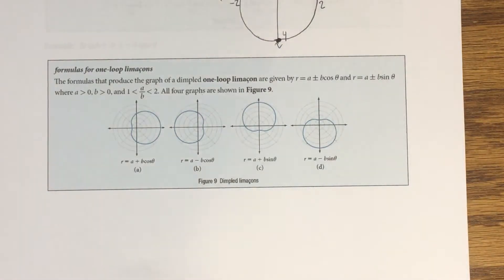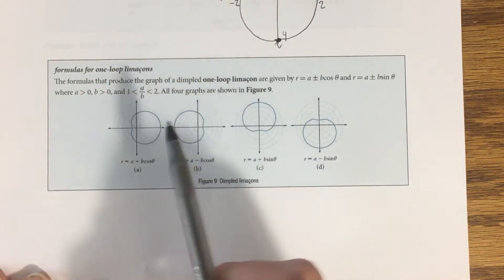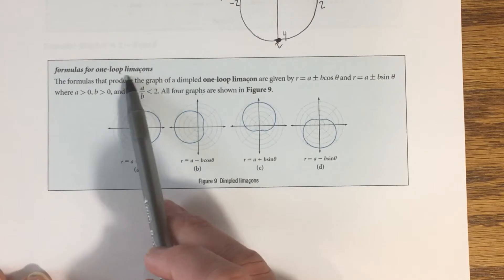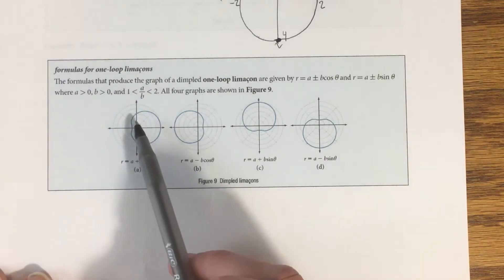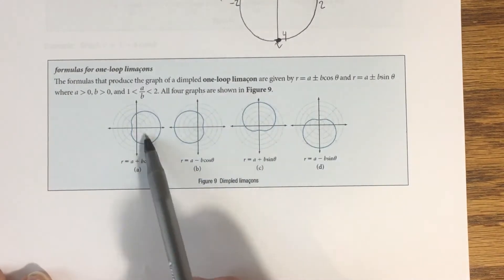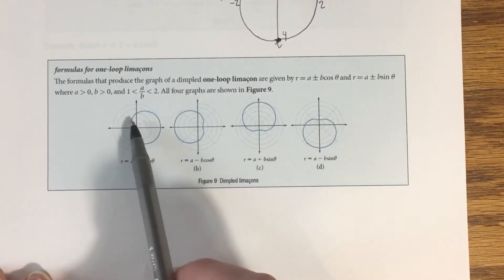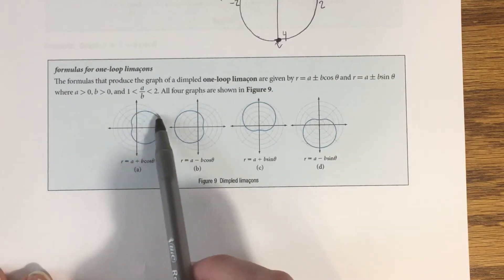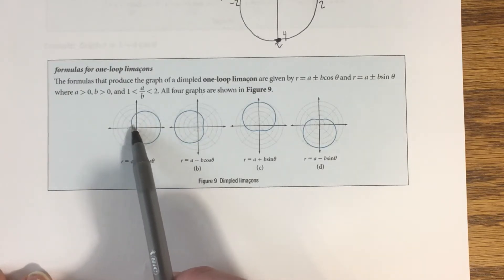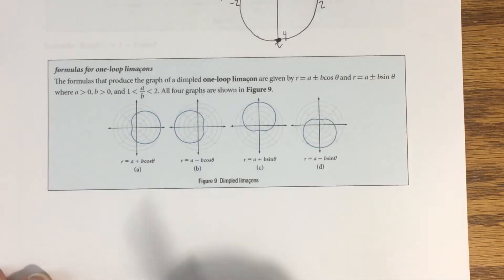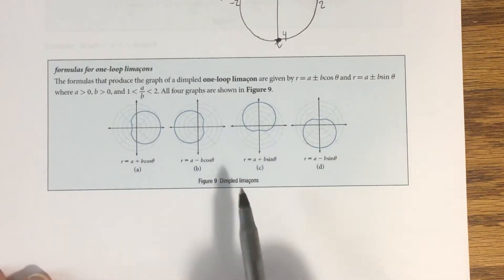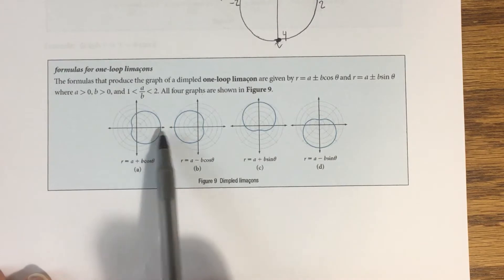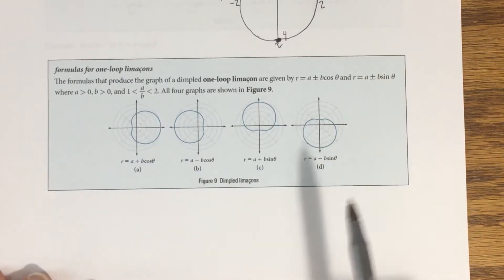Moving on with limaçons — we've looked at the cardioid, and next up is what we call a one-loop limaçon. One-loop limaçons are sometimes also called dimpled limaçons, because if you look at these graphs there's a part that kind of caves in, almost like a circle with a slight dimple. The orientation — whether they point right, left, up, or down — works the same way as circles and cardioids.